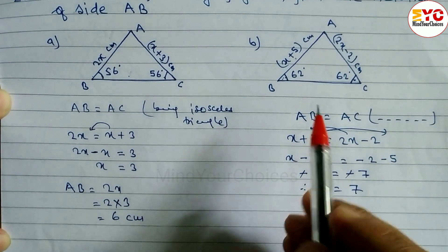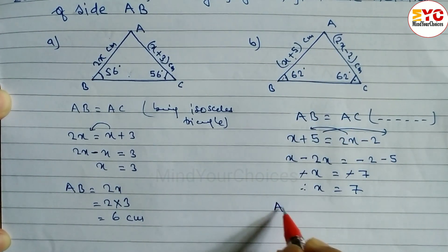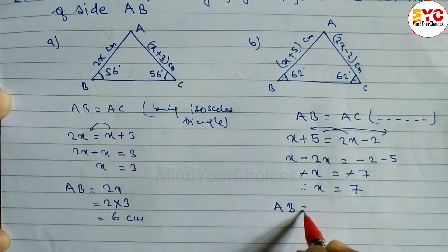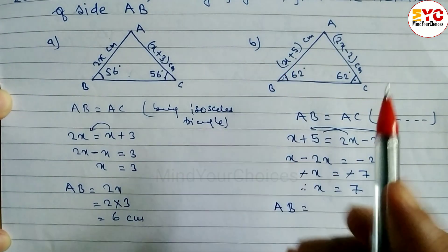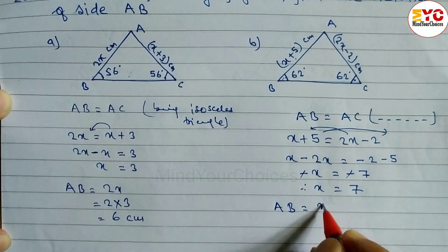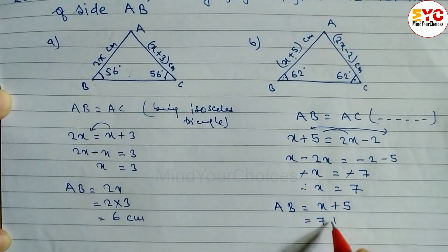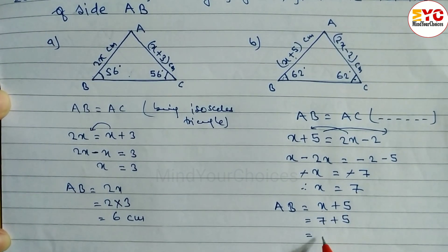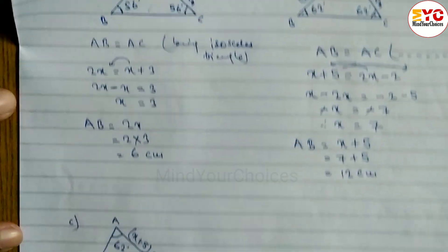We have to find side AB. AB equals x plus 5. Putting the value of x, which is 7: 7 plus 5 equals 12 centimeters. That is the answer for question b. Hope you understand.